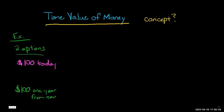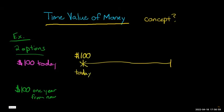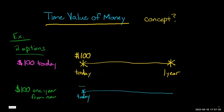You might say you prefer the hundred dollars today because you want to spend it. But let's assume you don't have anything you want to buy. You might think you're indifferent — whether you get it today or one year from now. But let's think about this, because money has a time value. Let's illustrate this on a little timeline. In option one, you receive the hundred dollars today. In option two, you receive nothing today but get the hundred dollars one year from now.